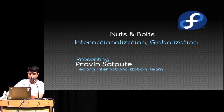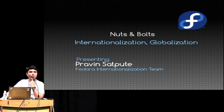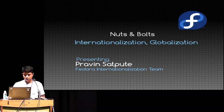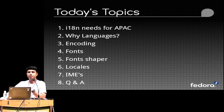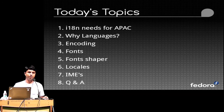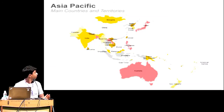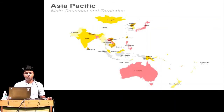This session is specifically for those who do not have English as their first language. As the topic says, we'll talk on very basic things of internationalization. We recently started a Fedora globalization initiative, and the name 'globalization' in the topic is specifically for that. I decided we need to cover two things: why we need internationalization or globalization, and then the basic stuff of internationalization. I specifically selected this topic for FADCON APAC — if you look at this map, these are APAC countries.